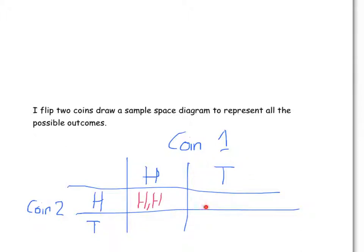In this box here, I'll have got a tail from coin one and a head from coin two. In this box, I'll have got a head from coin one and a tail from coin two. And finally, in the last box, I'll get a tail from coin one and a tail from coin two.